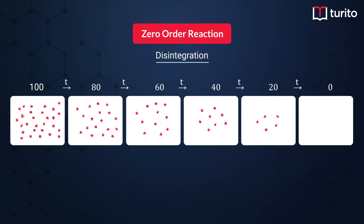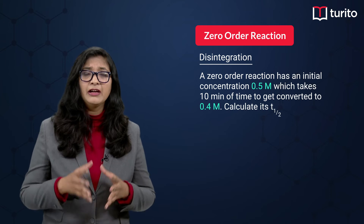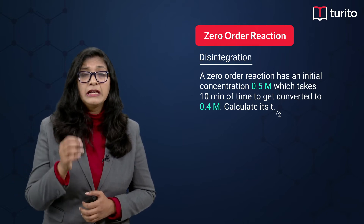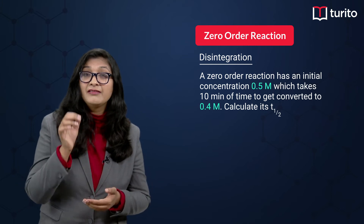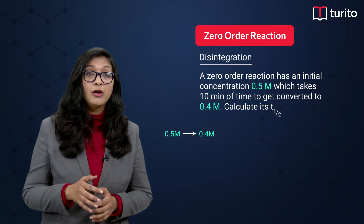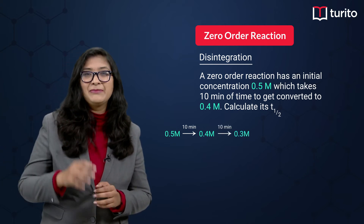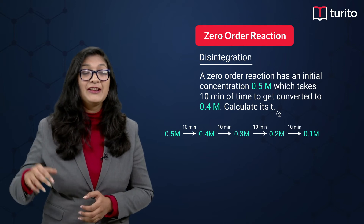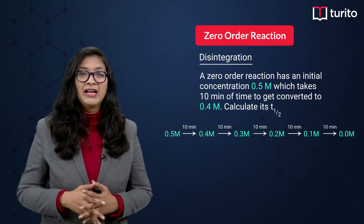Let us apply this with an example. A reactant starts at 0.5 molar and in 10 minutes it drops to 0.4 molar — a drop of 0.1 molar. So from 0.4 to 0.3 again takes 10 minutes, 0.3 to 0.2 again 10 minutes, 0.2 to 0.1 again 10 minutes, and 0.1 to 0.0 again 10 minutes.